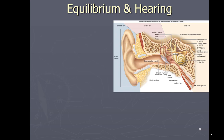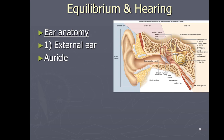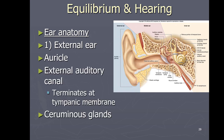We're going to continue talking about the ear and how it is used for our ability to detect equilibrium and hearing. Starting with the external anatomy, there are three parts to each ear: external, middle, and inner. The external part includes the auricle — the big flap you see — and inside it you have the ear canal, or external auditory canal, which continues until the eardrum begins.